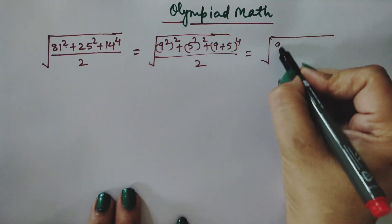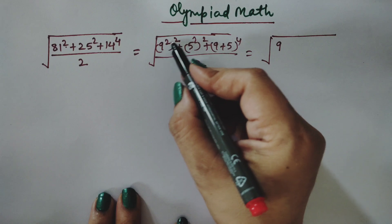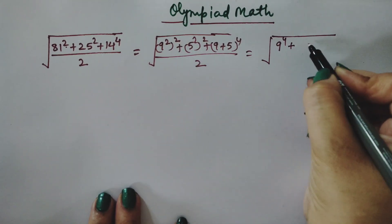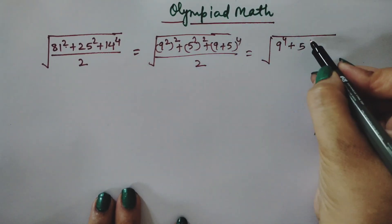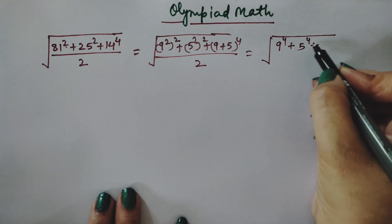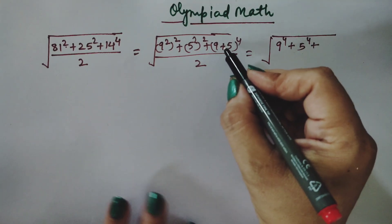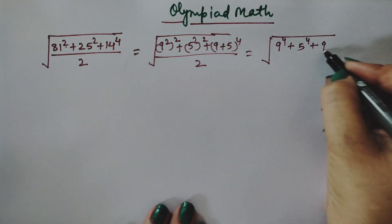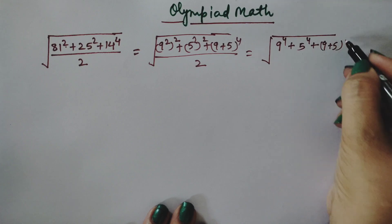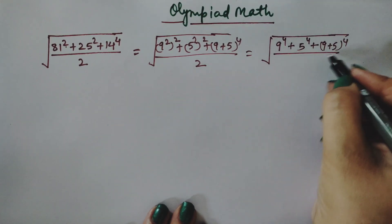Applying the law of exponents, 9 squared whole squared gives us 9 to the power 4, and similarly 5 squared whole squared gives 5 to the power 4. The (9+5) to the power 4 remains as it is.